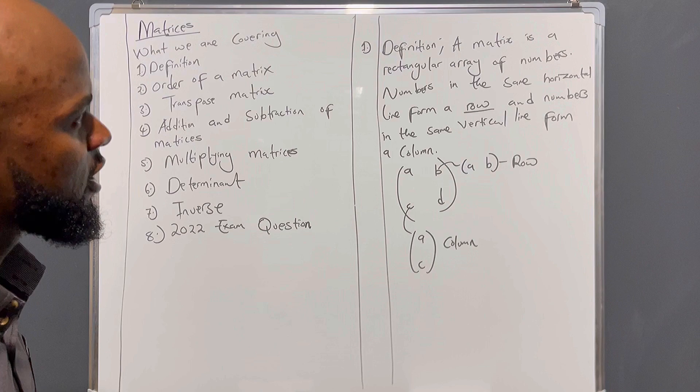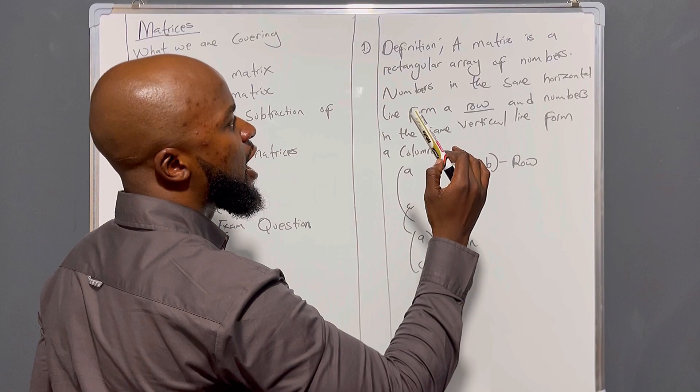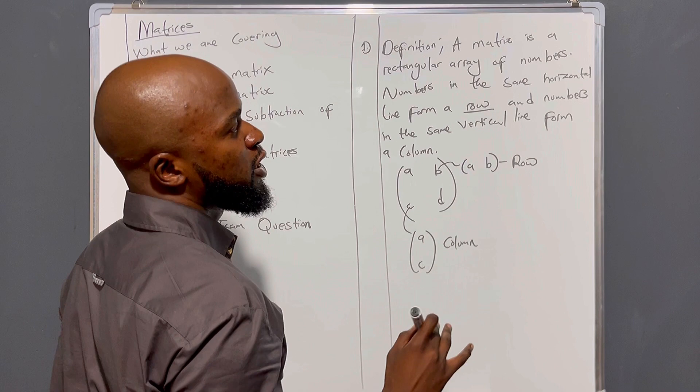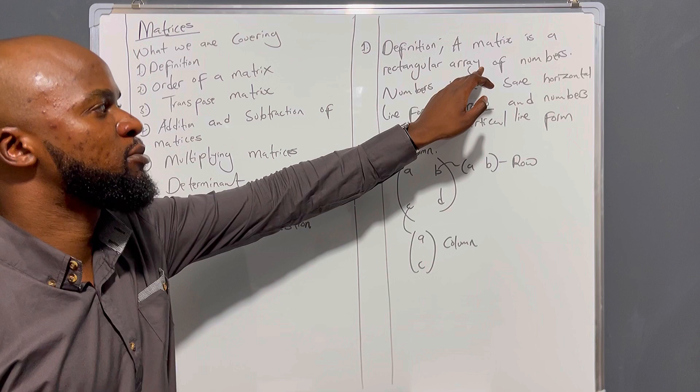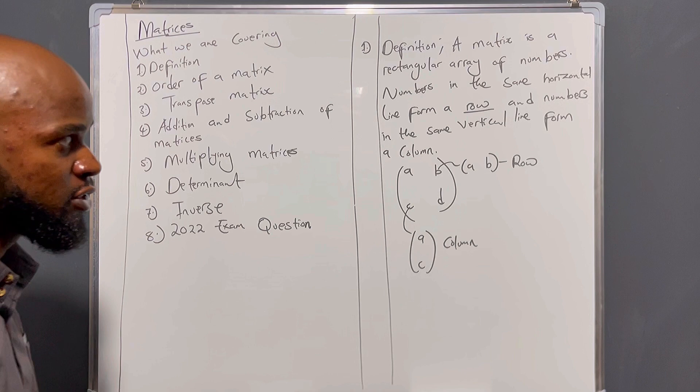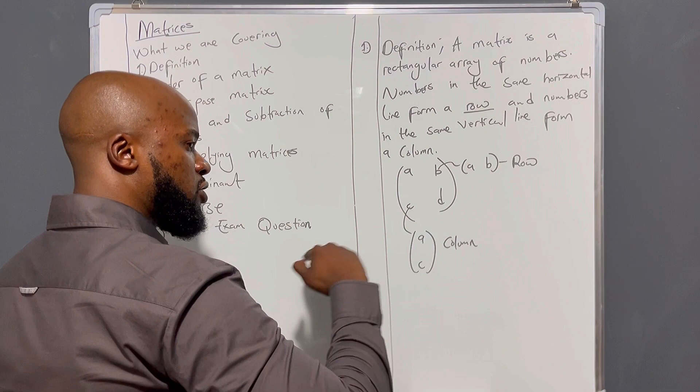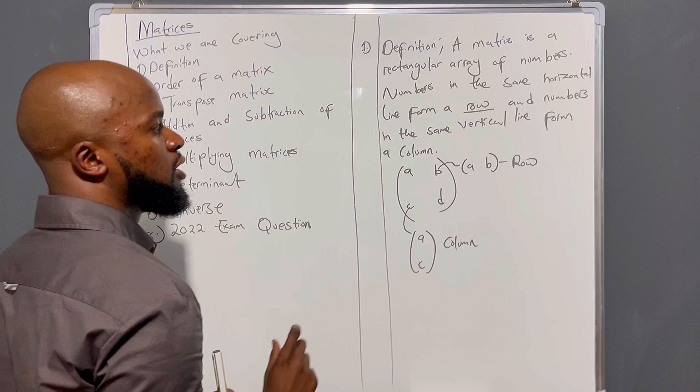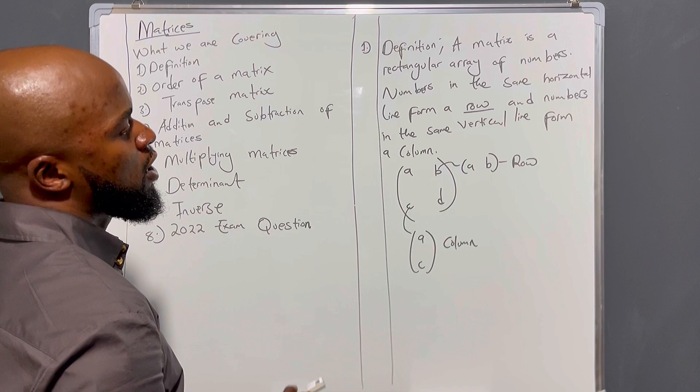Let's start with number one — the definition. What is a matrix? A matrix is a rectangular arrangement, or array, of numbers. Numbers in the same horizontal line form a row, and numbers in the same vertical line form a column.